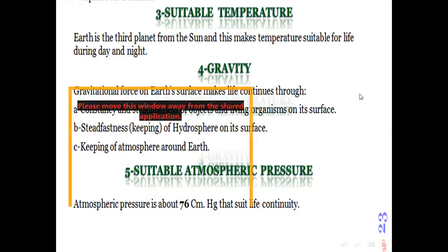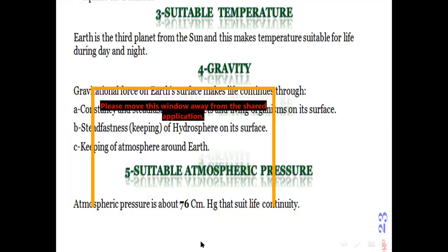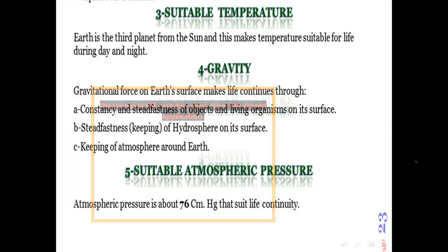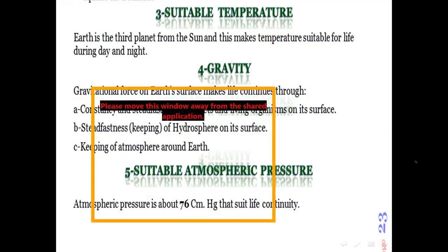Number four: gravity. From the features and properties which allow us to survive on planet Earth is gravity. Gravity helps us to stay alive on the planet. Without gravity, we would be like a feather flying in the atmosphere. But actually, gravity helps us to sit down, to stand, to go upstairs, to go downstairs, or even to sleep. Gravitational force was discovered by Isaac Newton, the scientist Isaac Newton.